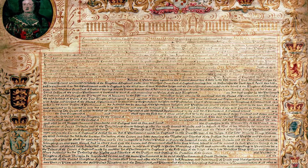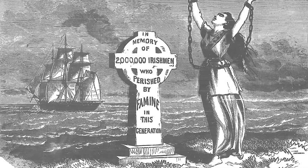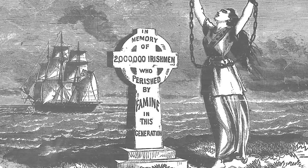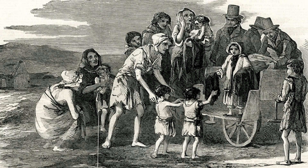During the Great Famine in the mid-1840s, the Irish island population of over 8 million fell by nearly one-third. One million Irish died of starvation and disease, and another 1.5 million emigrated, mostly to the United States.